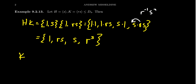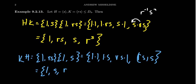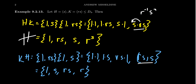On the other hand, taking KH, we reverse the order: {1, rs} times {1, s}. Looking at all combinations: 1·1 = 1, 1·s = s, rs·1 = rs, and rs·s = r·s² = r. So KH = {1, s, rs, r}. Notice that HK contains r³ while KH contains r, so these two sets are not equal. HK ≠ KH, which isn't too surprising since the multiplication of elements is non-commutative.